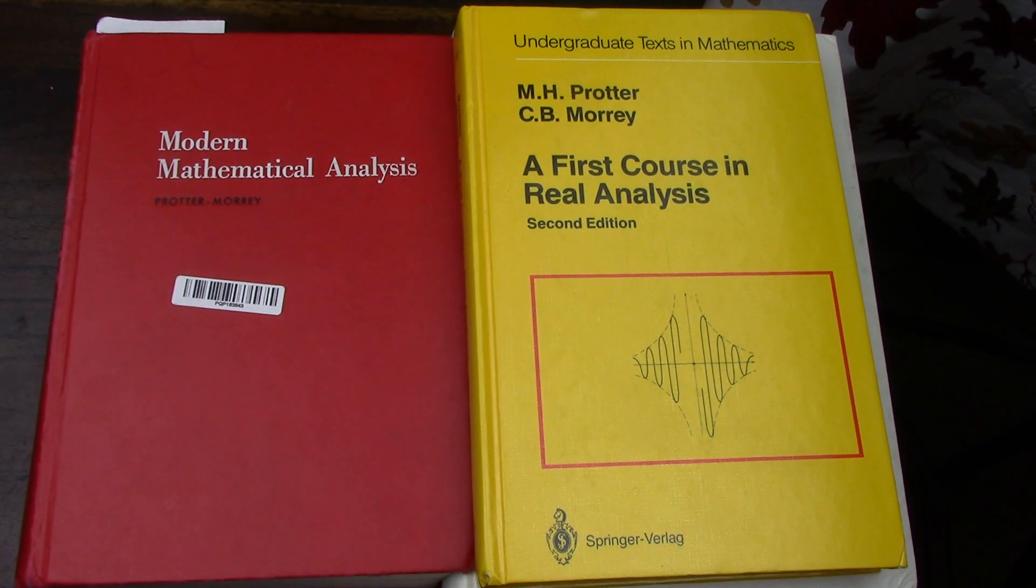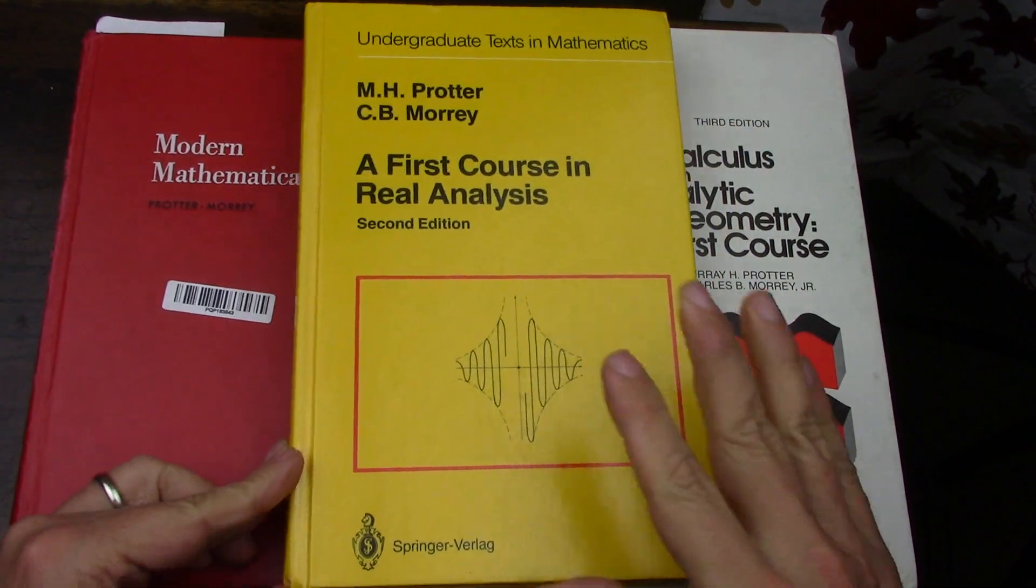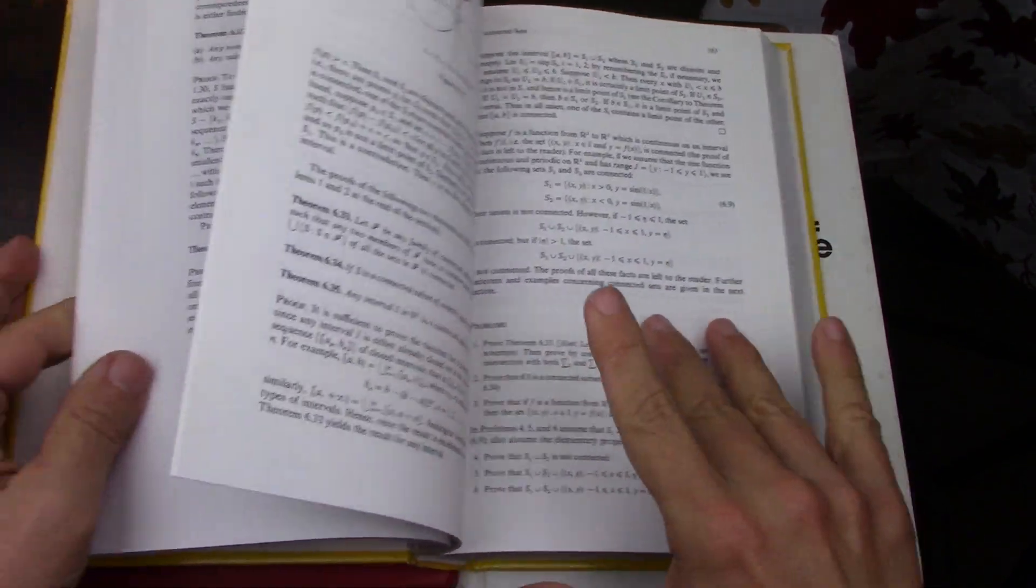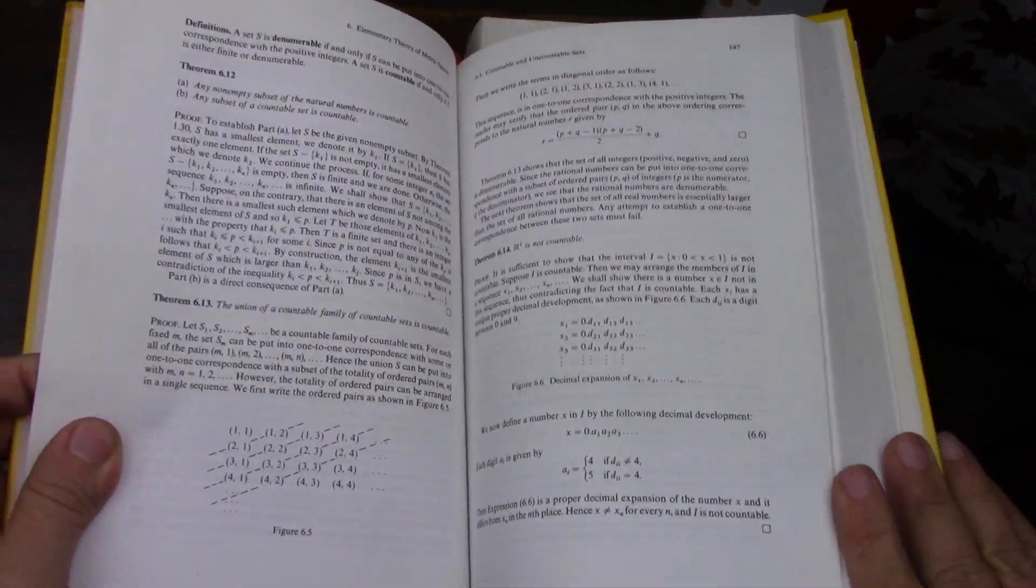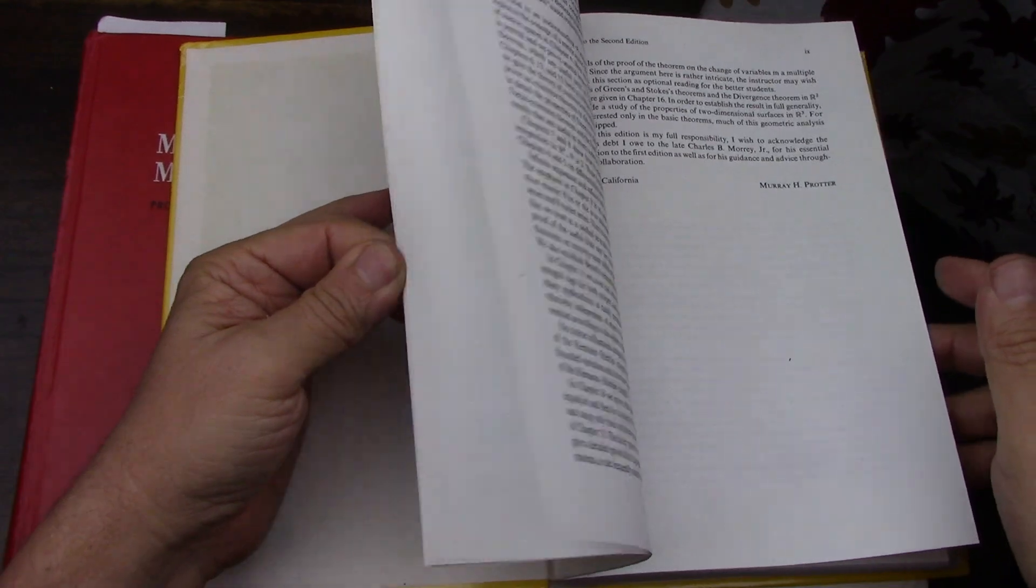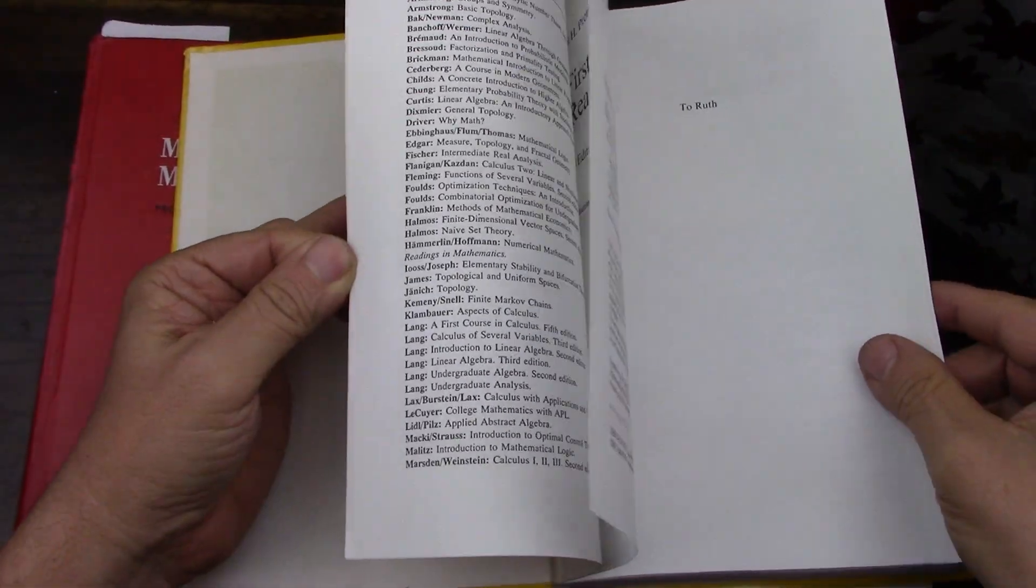In an almost random way, I came across what I call the Protter and Morrey family of books, and it really is a family of books. Originally, I just bought this book because it was for analysis, and I've shown this book before and found it to be very useful. I read from it occasionally. It's a little too brief for my taste.